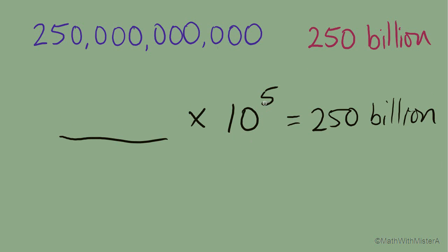this is 100,000, and it's a number with five zeros. So multiplying by 10 to the 5th is essentially going to create that part of the number, the 100,000 part, or the five zeros right there. And everything that's left over, we're going to need to include up front to create that 250 billion.